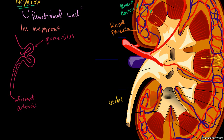It then leaves via the efferent arteriole. Efferent means away from the center; afferent means toward. Interestingly, we're still dealing with an artery at this point — still oxygenated blood. Normally after a capillary system we'd be in the venous system, but here we're still arterial, probably because arterial systems have higher blood pressure, and we need to squeeze fluid out of the blood in the glomerulus.